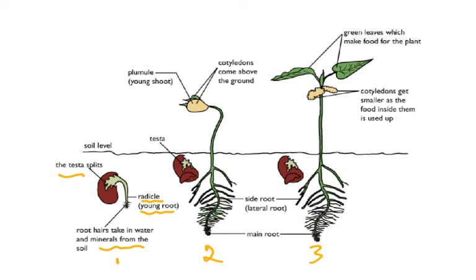The cotyledons are carried up above the ground and the plumule turns into the young shoot. A few days later the cotyledons get smaller because the stored food within them is being used by the plant. The plant cannot photosynthesize until it develops its leaves, so all the food in the cotyledons is being used up.